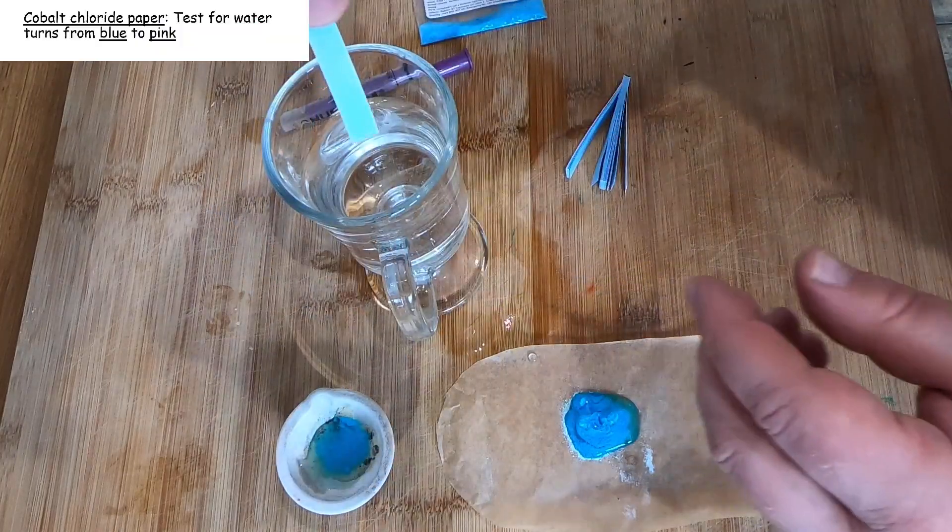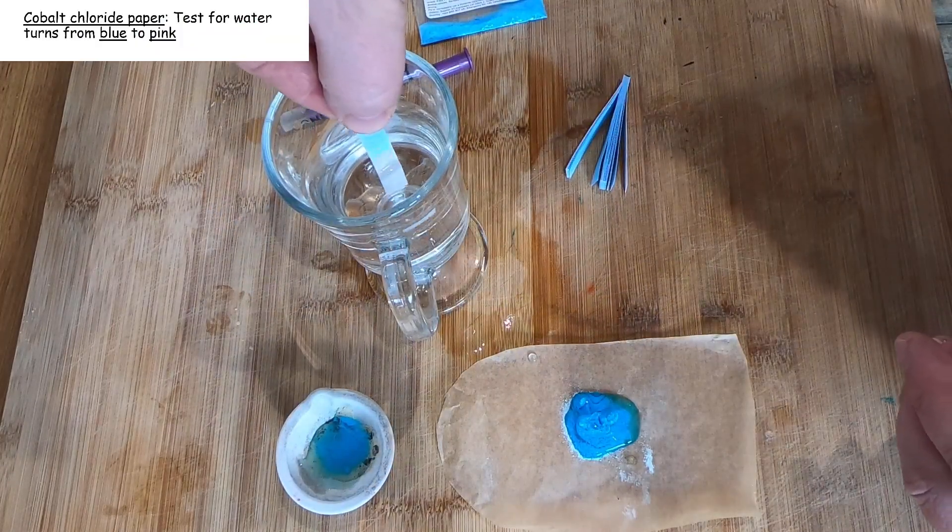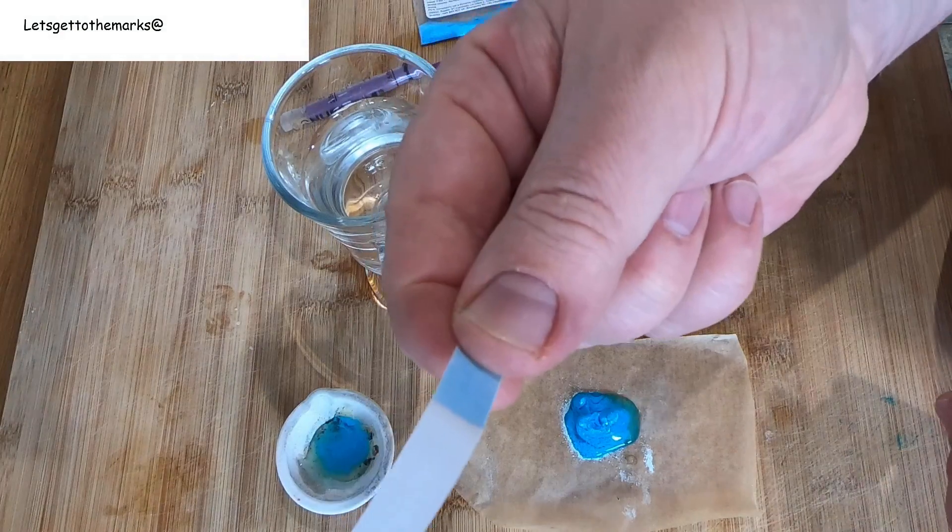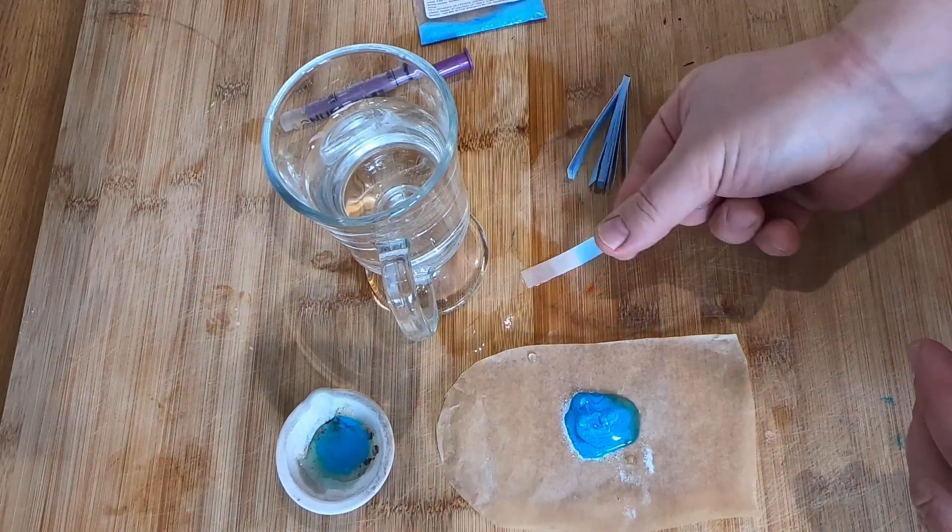What I'm going to do here, this is another viable answer in your exams. If you dip cobalt chloride paper into water, it turns pink.